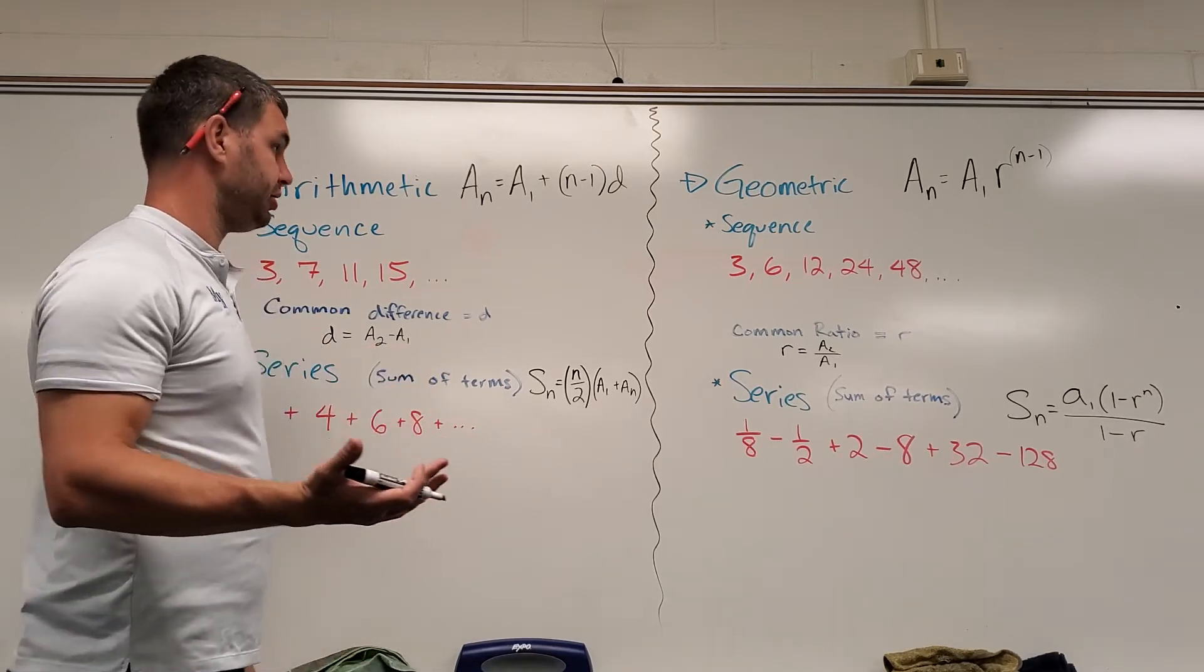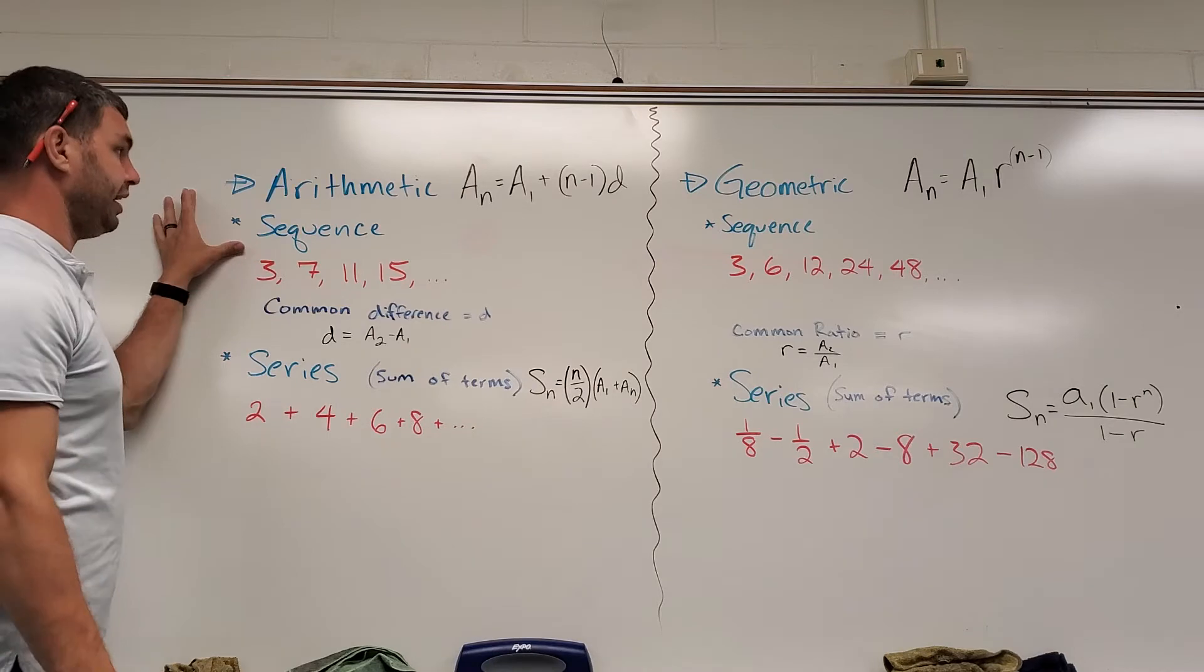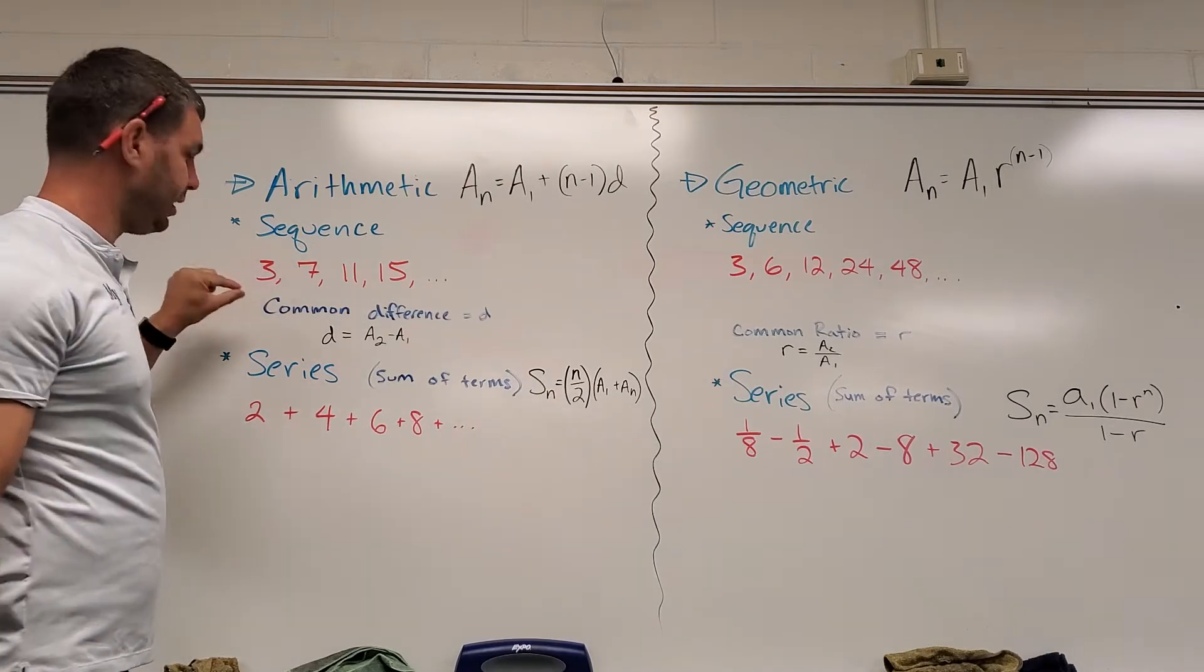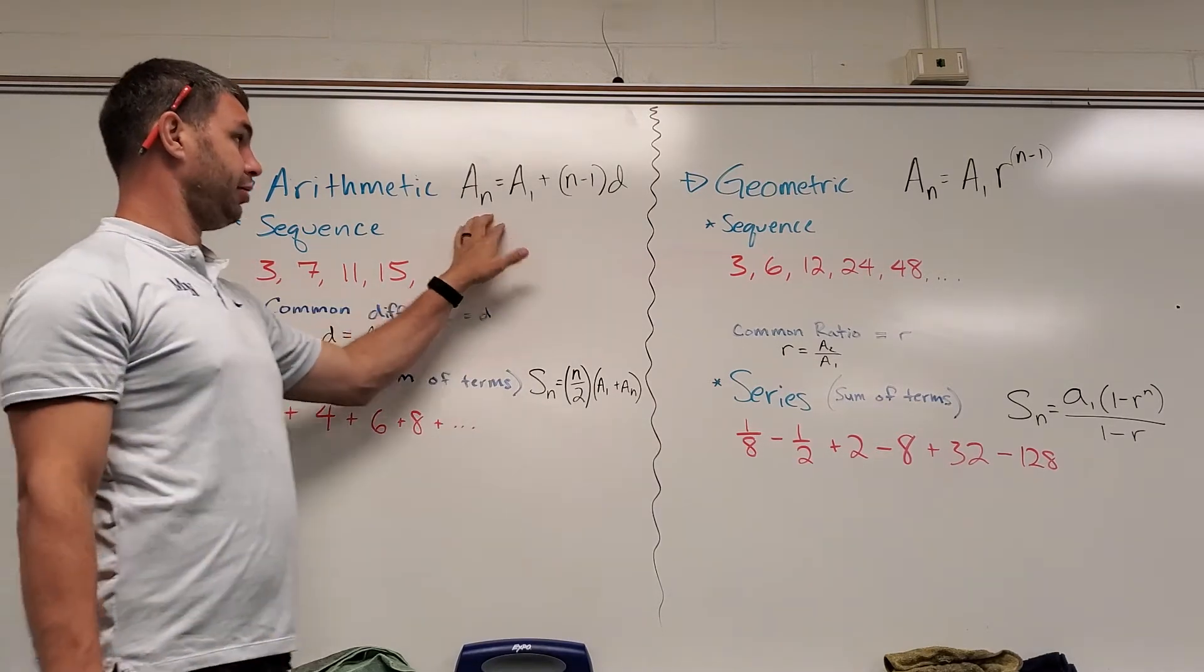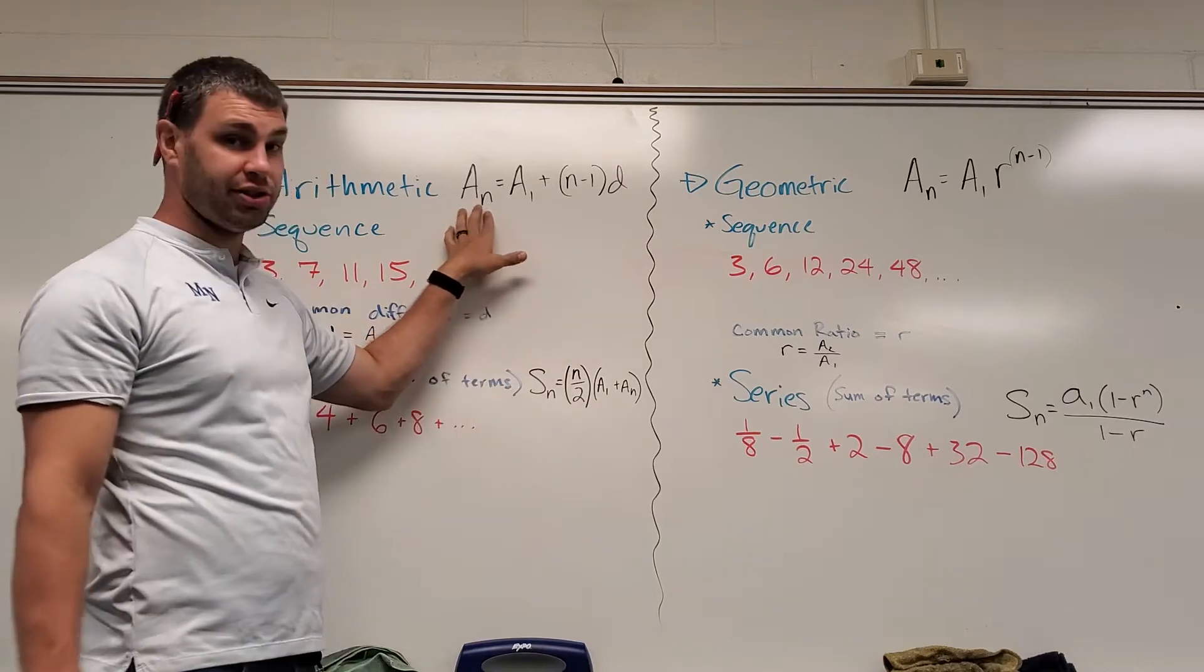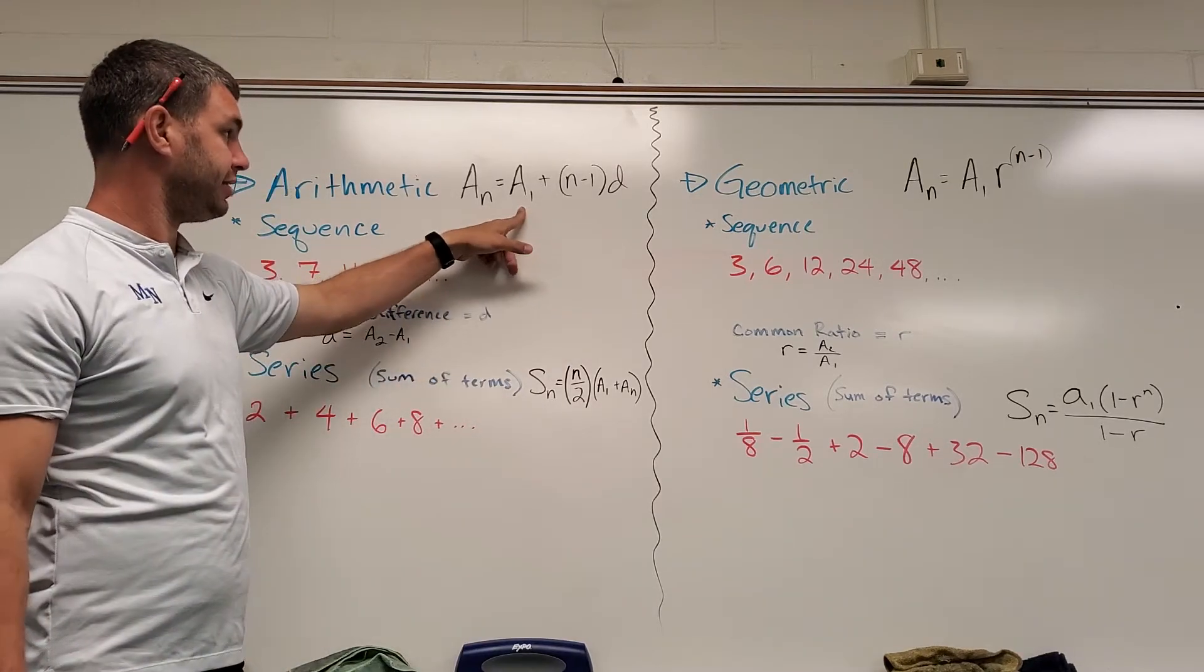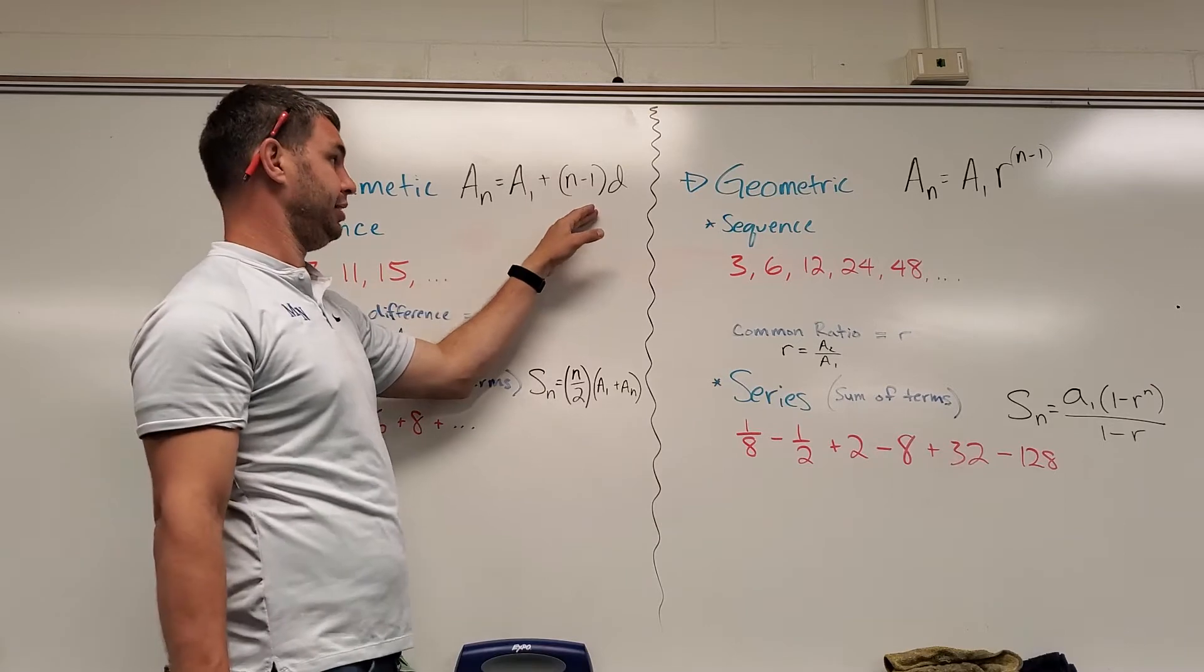The biggest thing is that arithmetic sequence has a common difference, and that's D. So our equation to find our nth term is our first term a sub 1 plus n minus 1 times the common difference D.